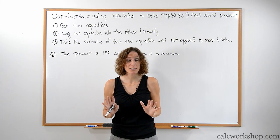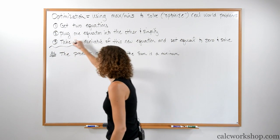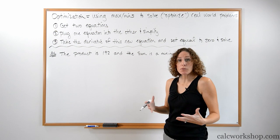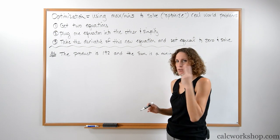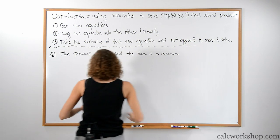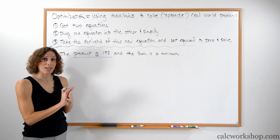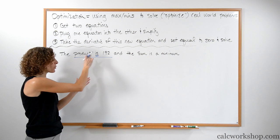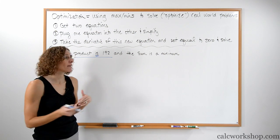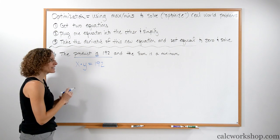The biggest part is finding the two equations. Let's start with a basic question and build from there. The first question is: the product is 192 and the sum is a minimum. From the sentence 'the product is 192' — product means two things being multiplied — we get x times y equals 192. We get to choose our two variables, and we tend to use x and y. That's our first equation.